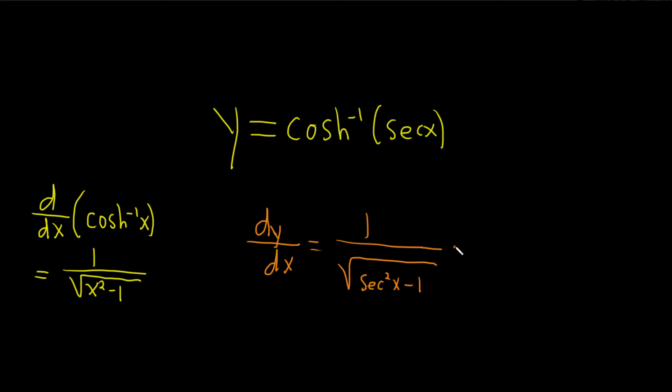So this is the derivative of the outside evaluated at the inside, then times the derivative of the inside, which is the derivative of secant, which is secant x tangent x.